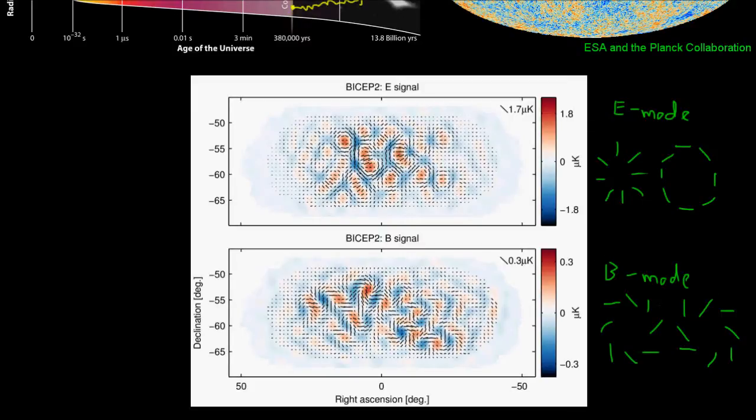And there's actually a mathematical way for any polarization map of determining how much E modes you have and how many B modes you have. And these are the polarization results of the BICEP2 experiment. This is how much of an E mode signal they found. The reds and blues correspond to how much of each of these two signals they got. And their B mode, the B mode signal that they found.